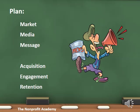In the right-hand column, we're looking at the three major parts of the fundraising funnel that we talked about earlier in this series. That's acquisition, engagement, and retention. You'll want to list out the activities you're doing in each of those areas for the particular target market that you're communicating with.